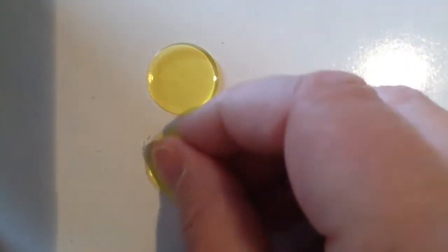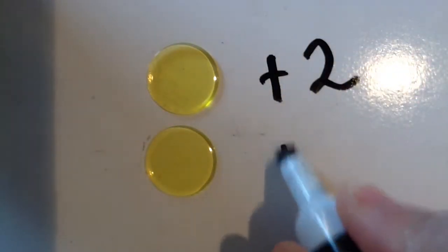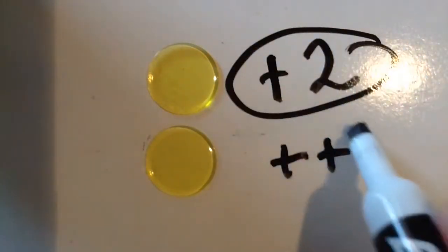Yellow disks, on the other hand, represent positive numbers. So say I put two yellows, that would be positive two or two positives. You can write them either way.